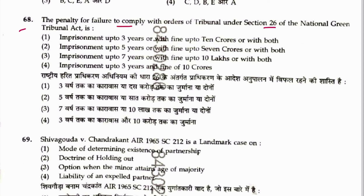Question 68: The penalty for failure to comply with orders of the Tribunal under Section 26 of the National Green Tribunal Act — imprisonment up to three years with fine up to 10 crores, or with both. Answer is 1.